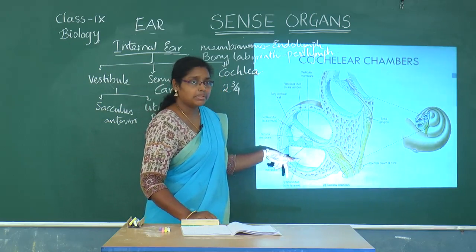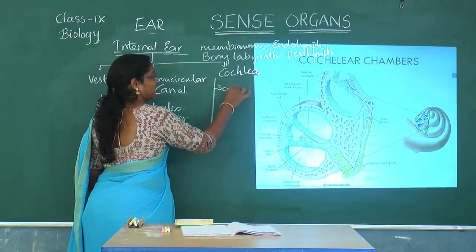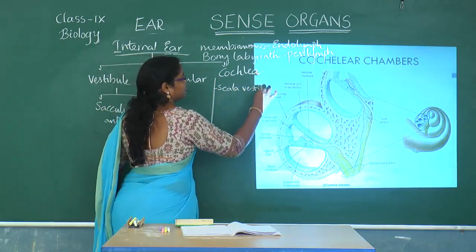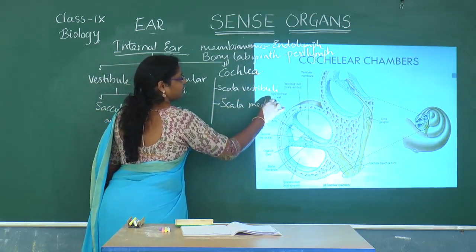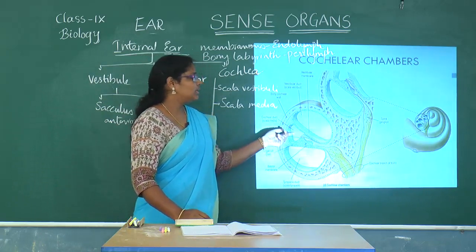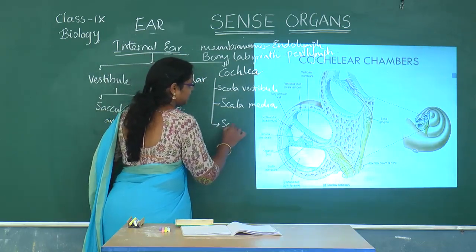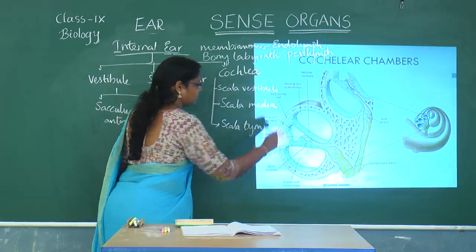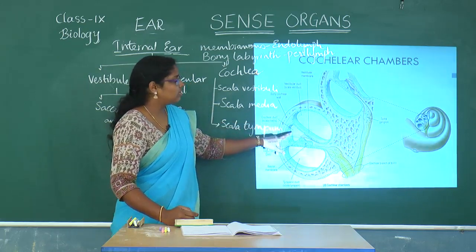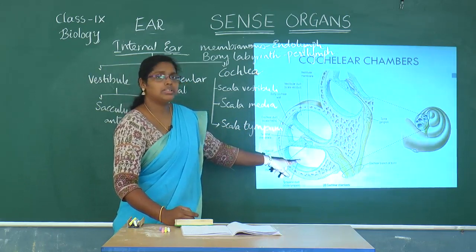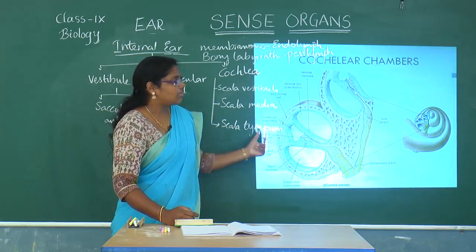The cochlea has three chambers: the upper chamber is called scala vestibuli, the middle chamber is called scala media, and the lower chamber is called scala tympani.